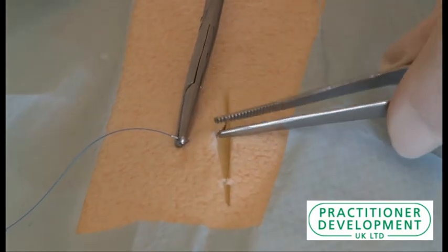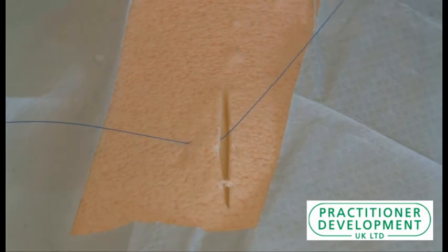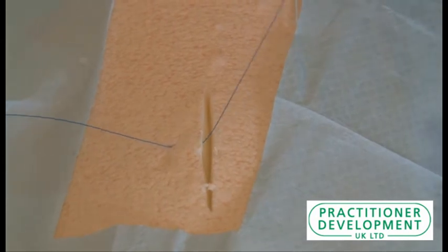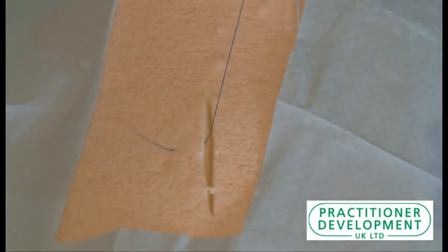We're then going to use the non-toothed forceps to help us pull this through on this side, and again we're going to re-hold the actual thread itself.